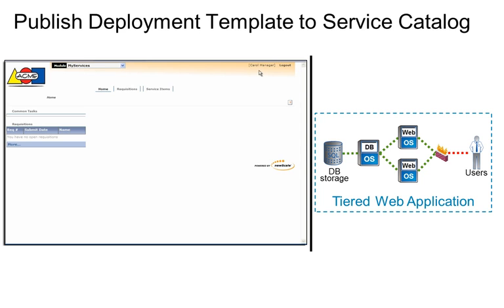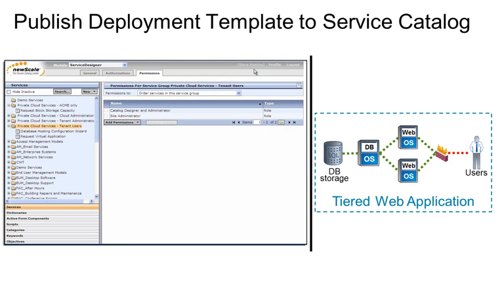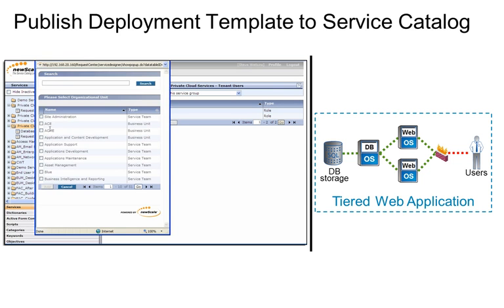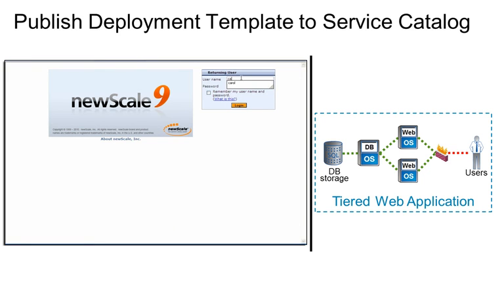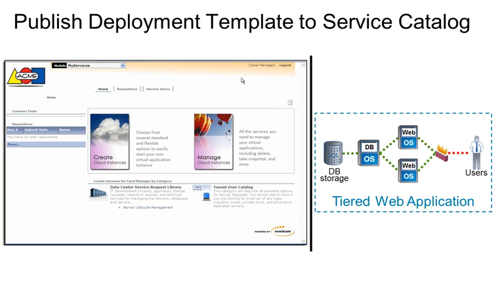We are now logged in as Carol, an Applications Development Manager and typical user. At this point, we can easily see there are no services published to her Acme tenant catalog. So now Steve will grab his defined services and publish it to the Acme tenant catalog by giving permissions to the Acme organization. Now, when Carol logs back in, the services show up for her and other tenant users to see.